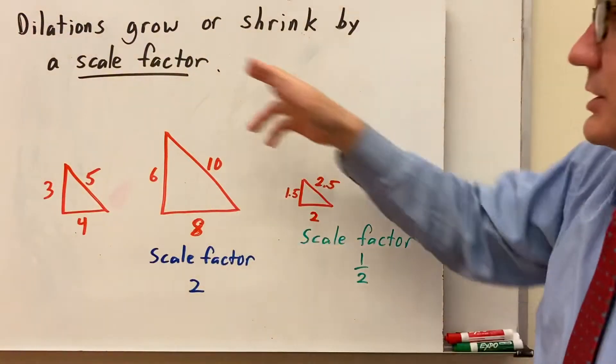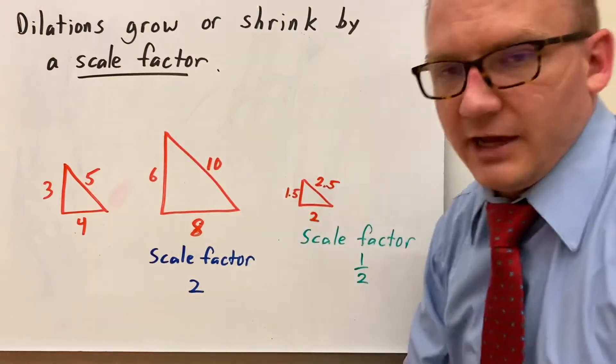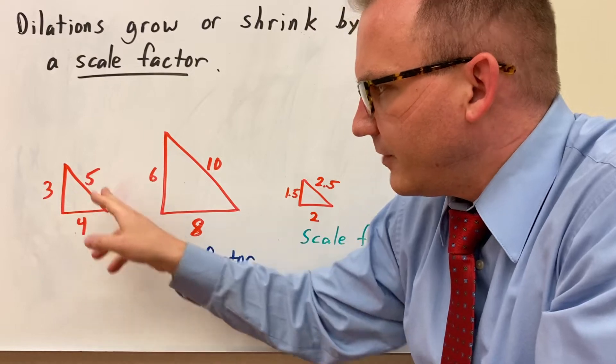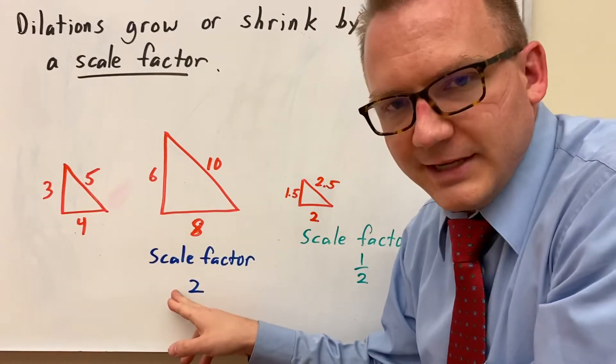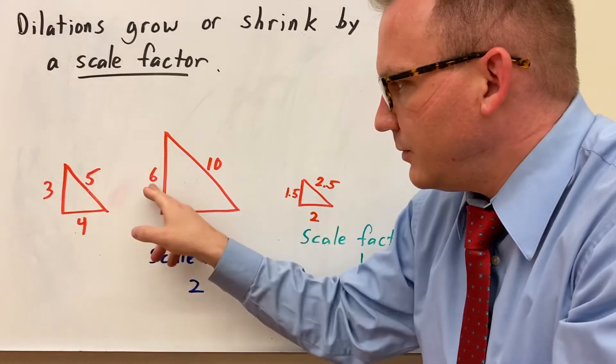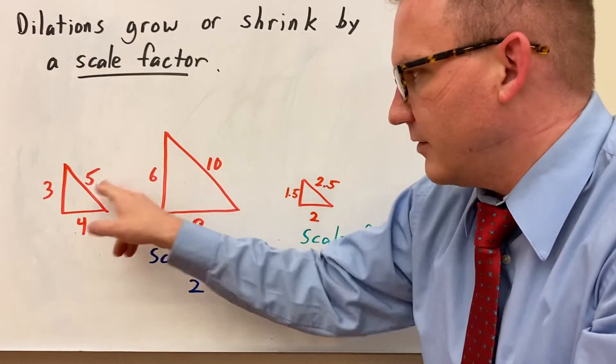So a dilation will either grow or shrink by a scale factor. So very simply if I have a triangle with sides 3, 4, and 5, if I multiply that by a scale factor of 2 or grow it, the 3 would become a 6, 4 would become an 8, 5 would become a 10.